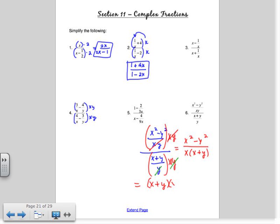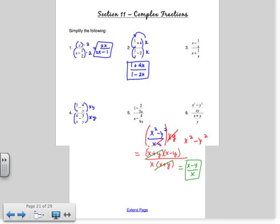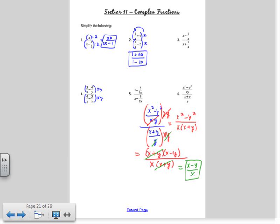Because as I'm doing this, I'm realizing that x squared minus y squared can be factored into x plus y times x minus y. And on the bottom, I have x times x plus y. My final step is the x plus y's cancel. So I get x minus y all over x. And that's your answer.